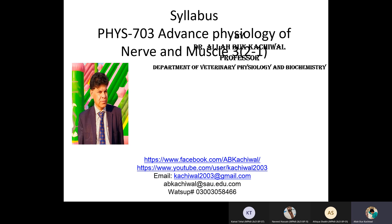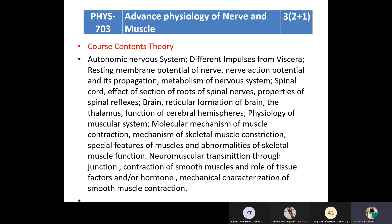The subject code is Physio 703, whereas the title of the course is Advanced Physiology of Nerve and Muscles. There are three credit hours in this course, whereas two will be theory and one will be practical.